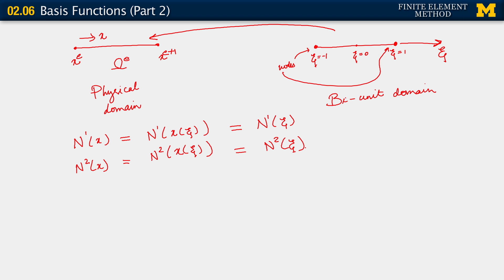All right, so now that we are in this bi-unit domain, it becomes very convenient to write out our basis functions. Here they are. N^1 of xi equals (1 minus xi) divided by 2, and N^2 of xi equals (1 plus xi) divided by 2. Completely clear what's going on here.